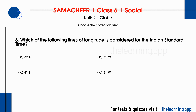Question 8: Which of the following lines of longitude is considered for the Indian Standard Time? Options are A. 82E, B. 82W, C. 81E, D. 81W. Correct answer is A. 82E.